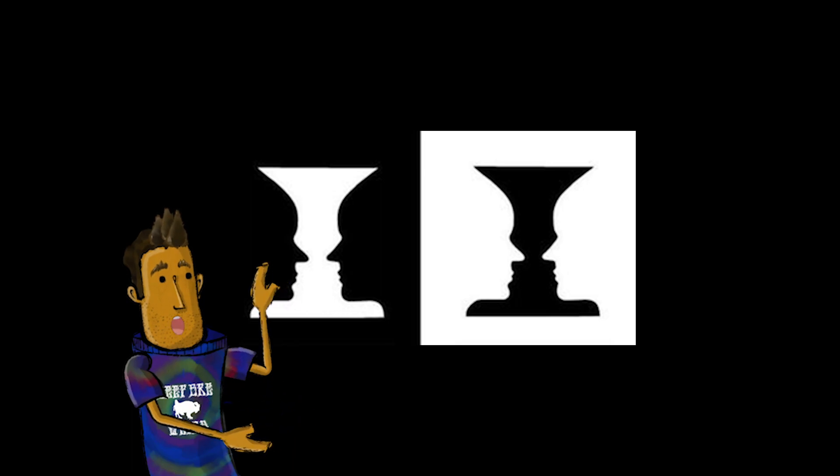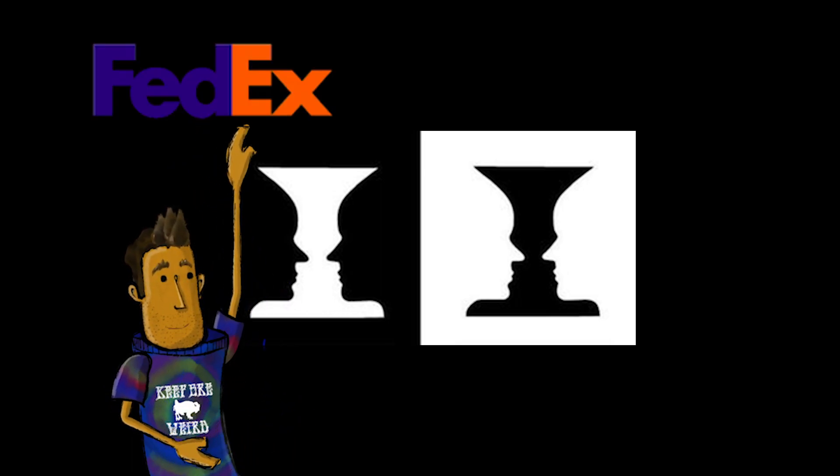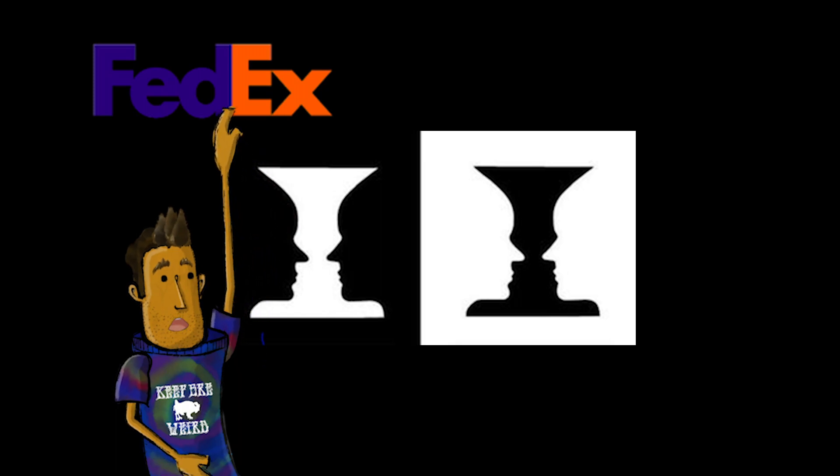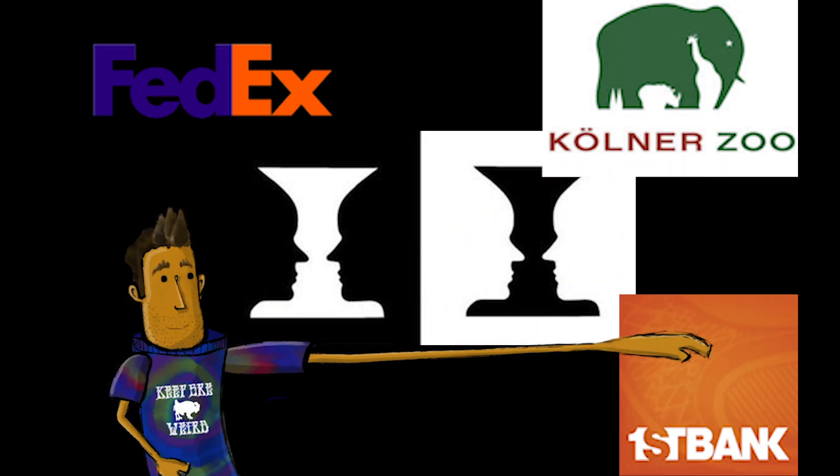Some famous logos often use positive and negative space, like the FedEx logo. Sometimes when people look at FedEx, they see the words Fed and X, but if you look at the space in between the letters, you can see a little arrow. And there are a lot of logos that use positive and negative space.